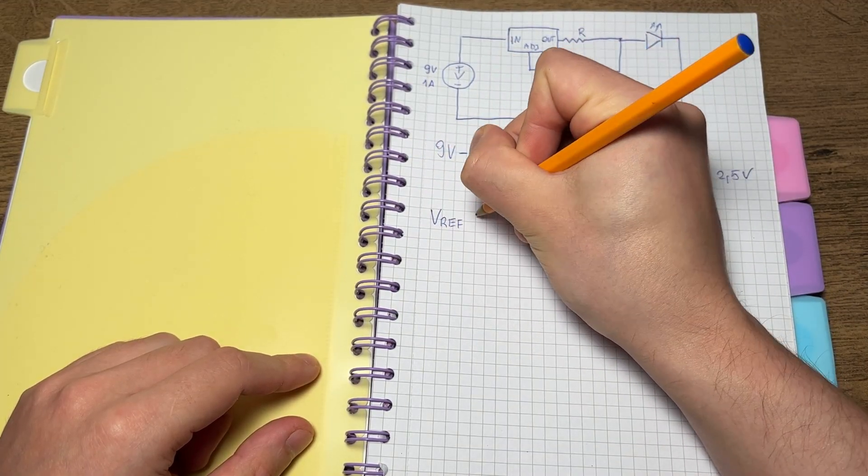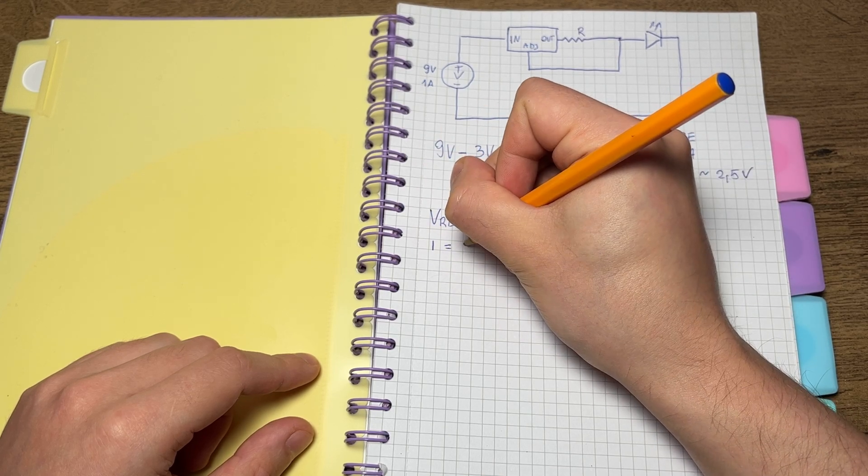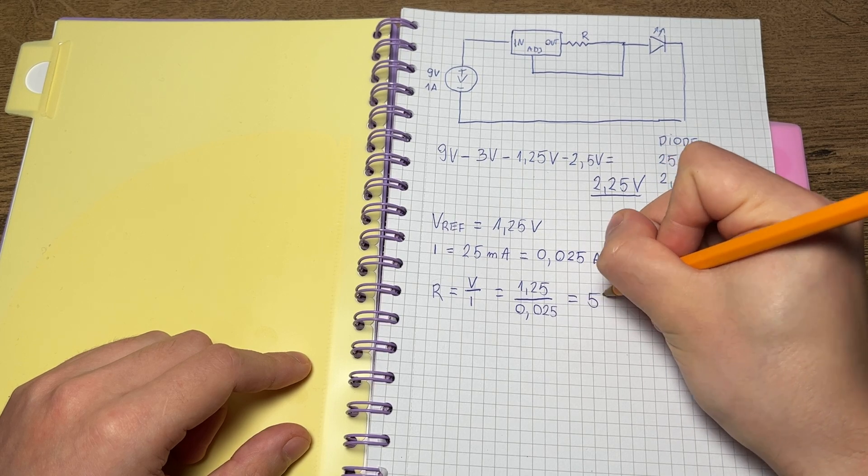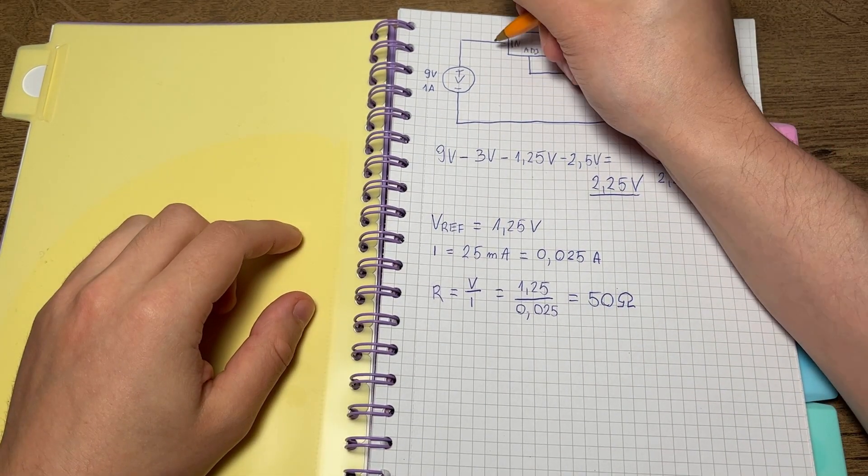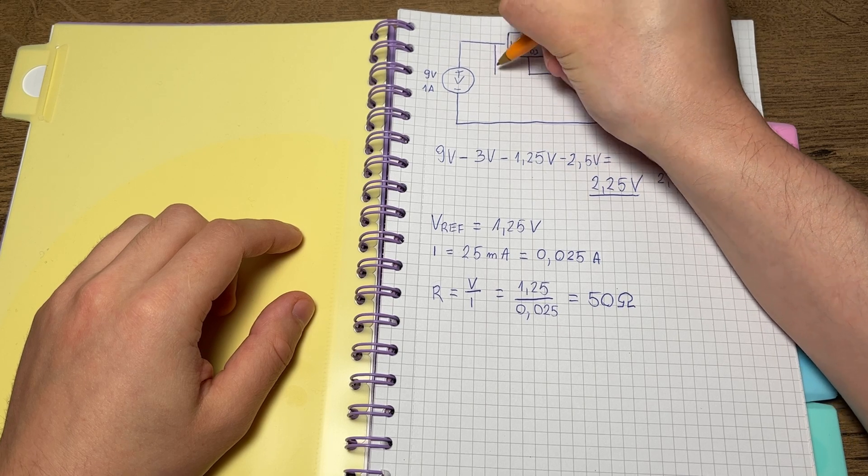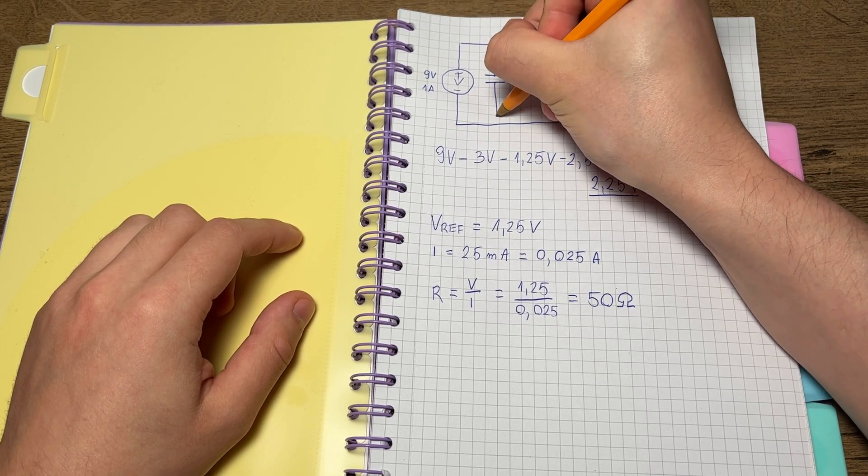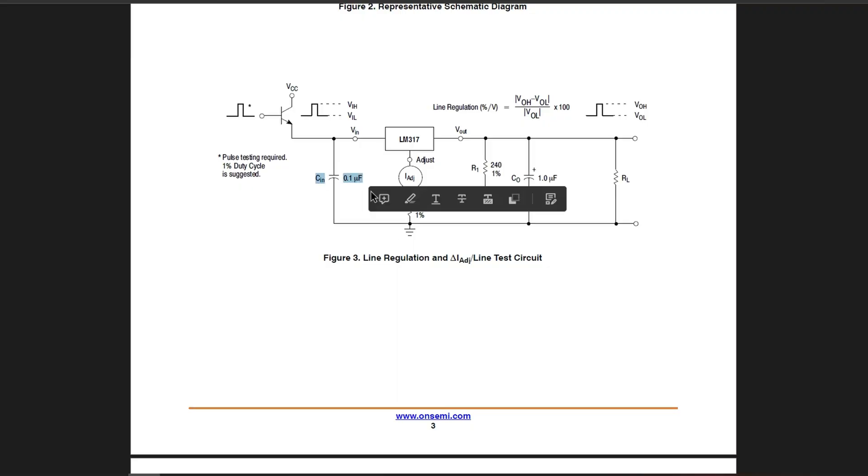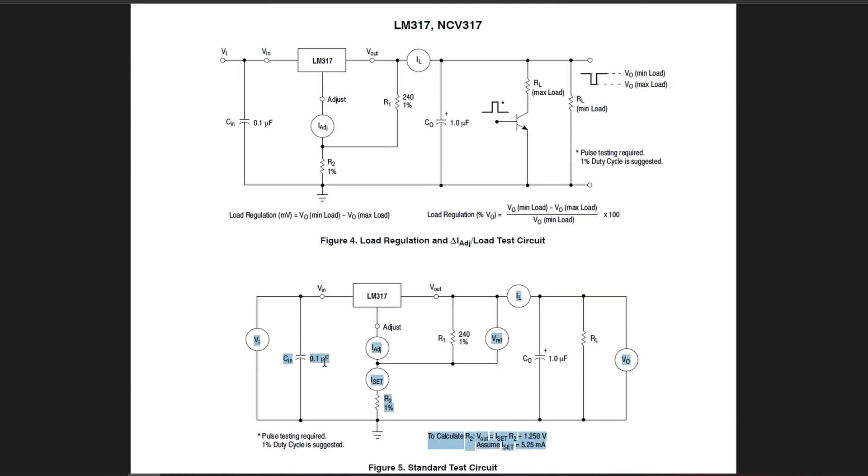Now we know that voltage drop through resistor is 1.25 volts and we need 25 milliamps of current. Using Ohm's law we can calculate that we need resistance of 50 ohms. And lastly adding capacitor in parallel just after source should prevent unwanted quick rises in voltage when powering on and off this circuit. I choose 0.1 microfarads because it is what I found in datasheet for LM317.